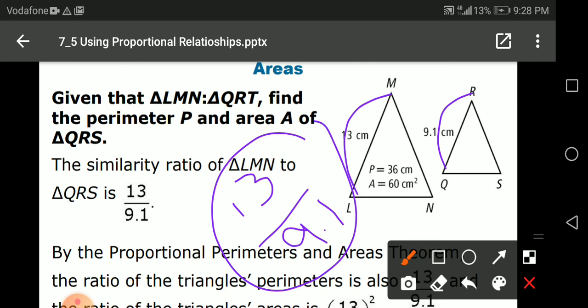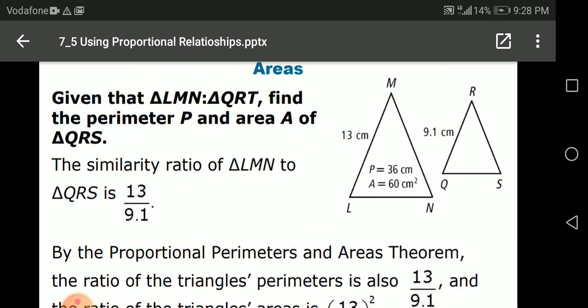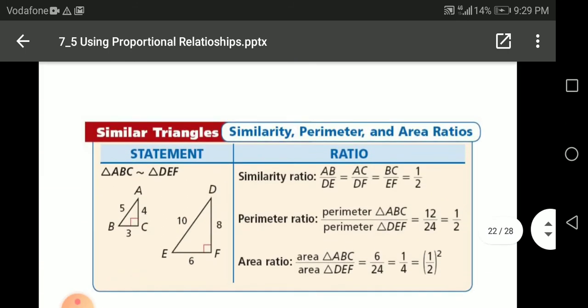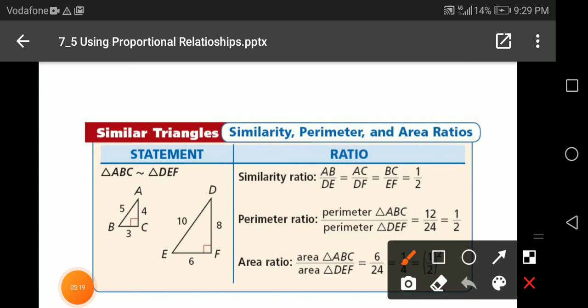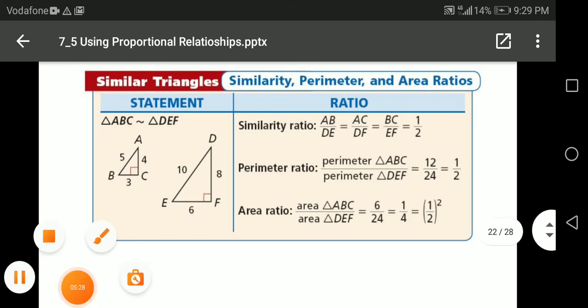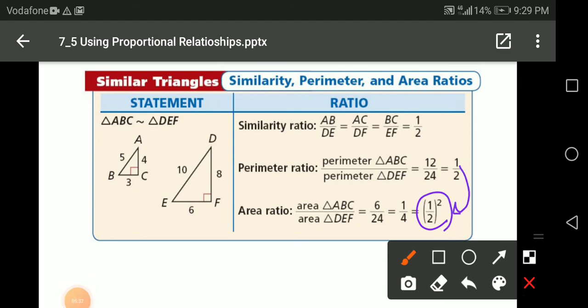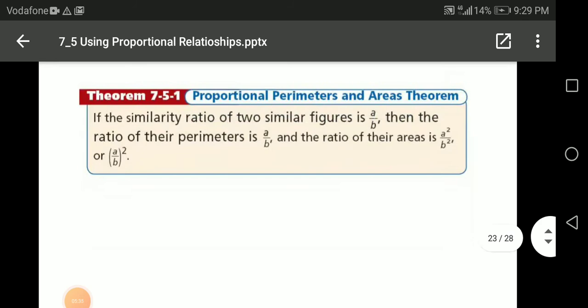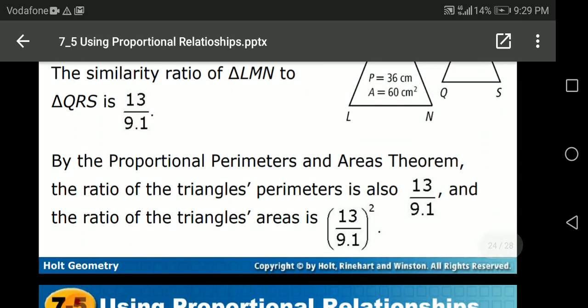So this is the similarity ratio. What about the perimeter? The perimeter will be the same as 13 over 9.1. And what about the area? The area will be 13 over 9.1 all squared. Why? Because looking back to this example, when I find the ratio, the similarity ratio, the perimeter ratio will be the same. And the area ratio will be squared. It's easy like this.